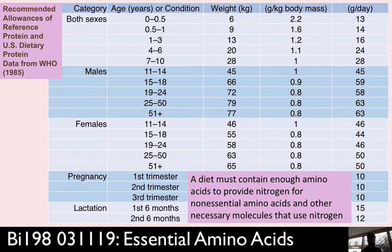If you are a pregnant woman, you have increased nitrogen demands. A 25-to-50-year-old woman needs about 50 grams of protein per day; however, if you are pregnant, you add an extra 10 grams per day onto that, so a pregnant woman needs about 60 grams per day. That's because she's in positive nitrogen balance.